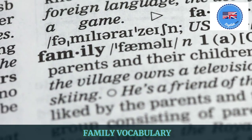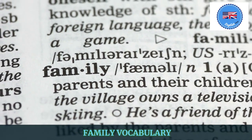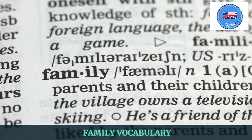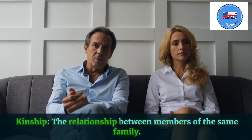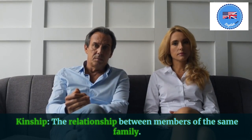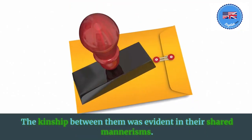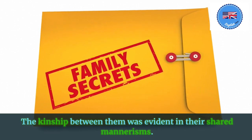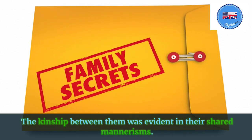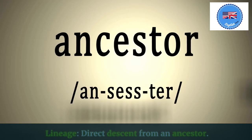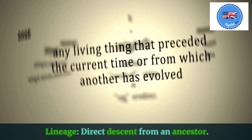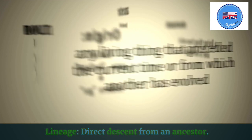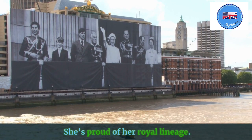Family vocabulary. Kinship: the relationship between members of the same family. The kinship between them was evident in their shared mannerisms. Lineage: direct descent from an ancestor. She's proud of her royal lineage.